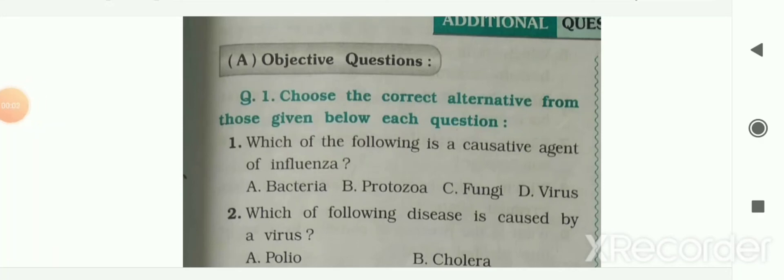Hello students. In this video we will see some extra exercises for chapter 2 of class 8 NCERT Science. The chapter name is 'Microorganisms: Friend and Foe.' In the previous video we had seen the NCERT textbook solution. Now let me start with the exercise.